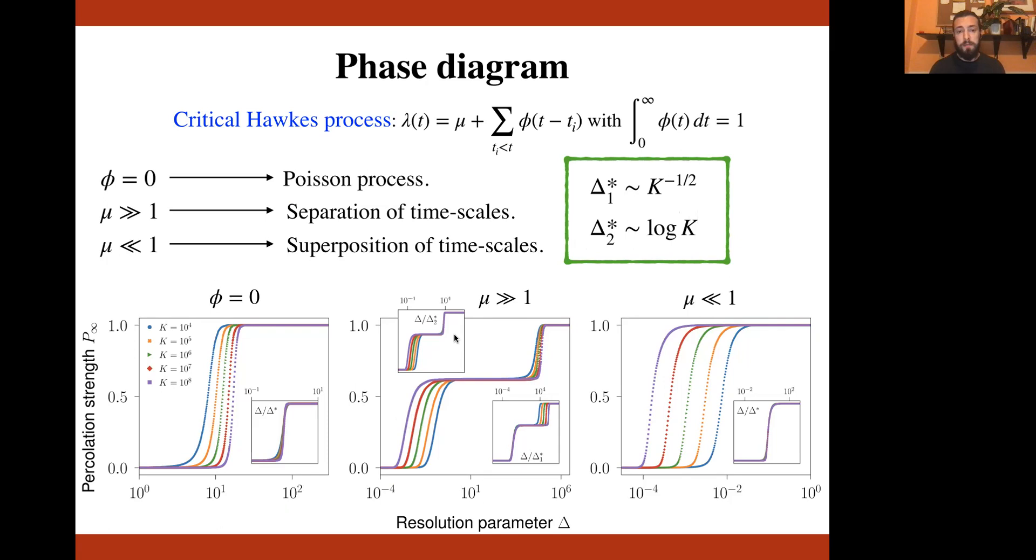While interestingly, the first transition point has a critical point that scales with the system size as one over the square root of k. And in particular, the transition point goes to zero in the thermodynamic limit. And there is this very large region of plateau of the order parameter whose extent diverges again in the thermodynamic limit.